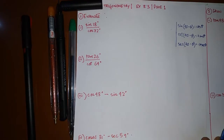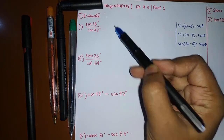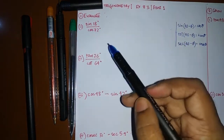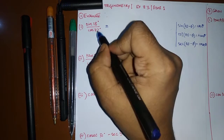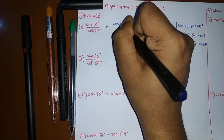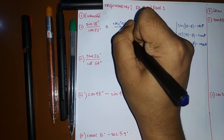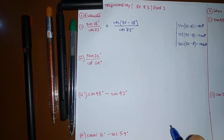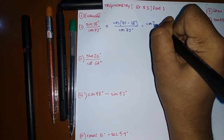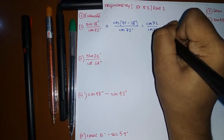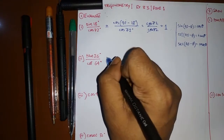Let's start with the first question: sin 18° / cos 72°. We'll convert sin to cos using the formula: sin 18° = cos(90° − 18°) = cos 72°. So we get cos 72° / cos 72°, which cancels out and gives us 1 as the answer.